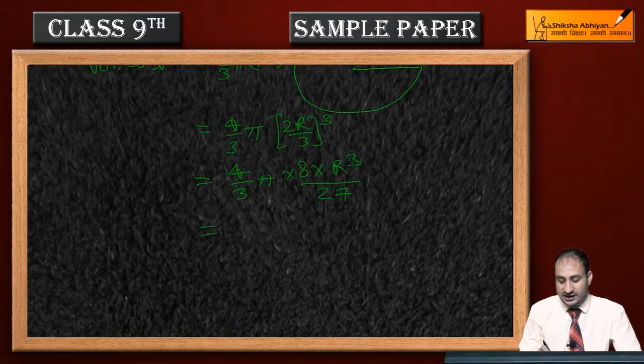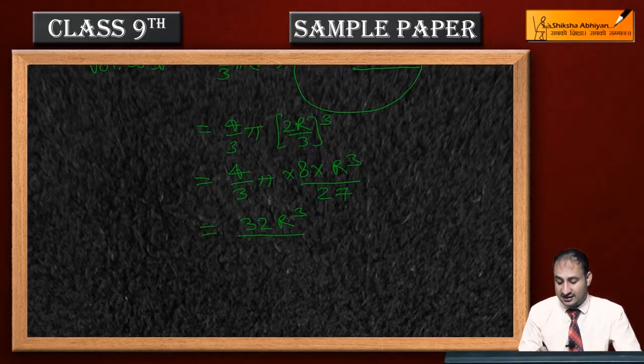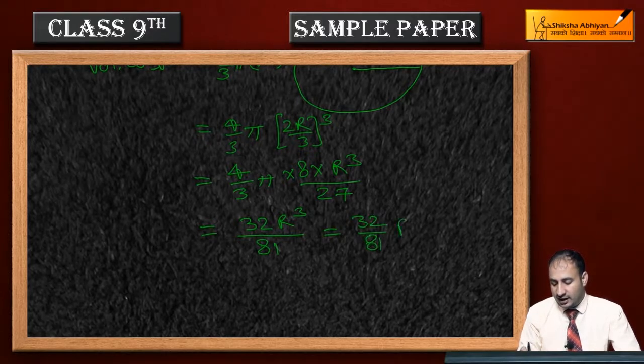Toh kitna hai ga? 4, 8 zahe. 4, 8 zahe, 32 R cube. Aur upar mein 3 into 27. Kitna hai ga? That is 81. Toh 32 by 81 r cube.